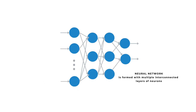Just like in a real brain, neural networks consist of many interconnected neurons forming layers. The output of some neurons becomes input for others, creating a network that can process and learn from data. Their collective behavior enables the network to learn, make predictions and solve complex problems.